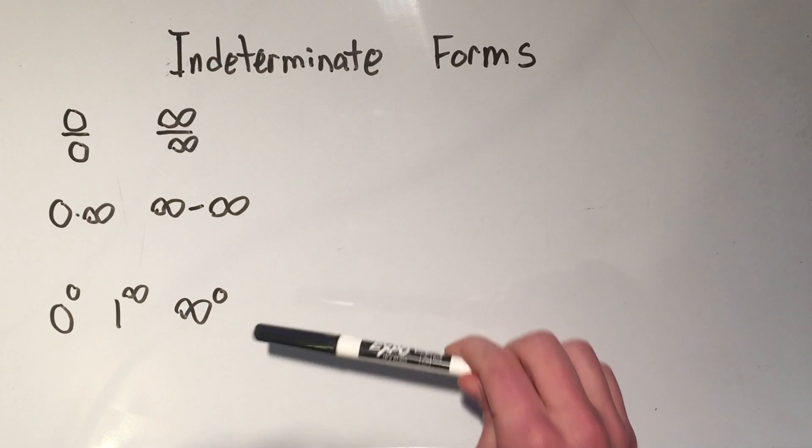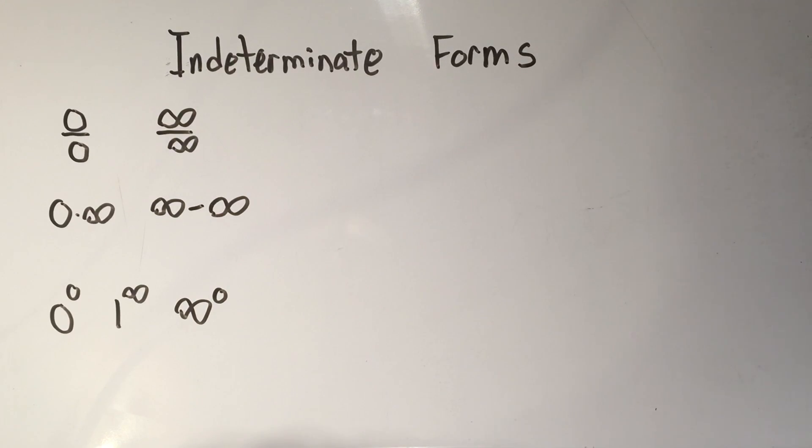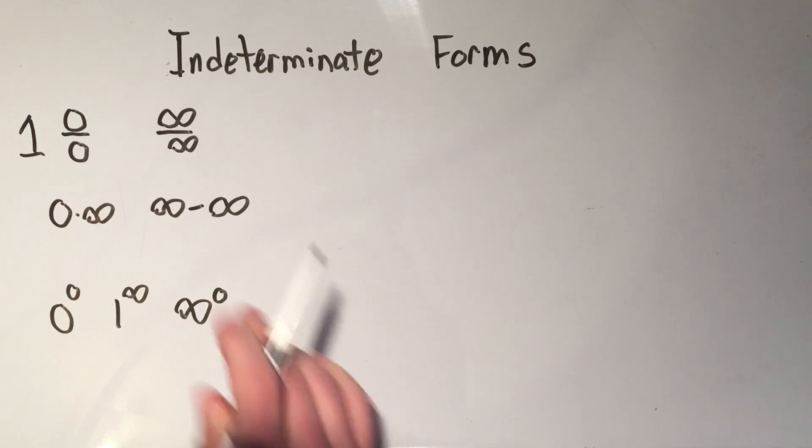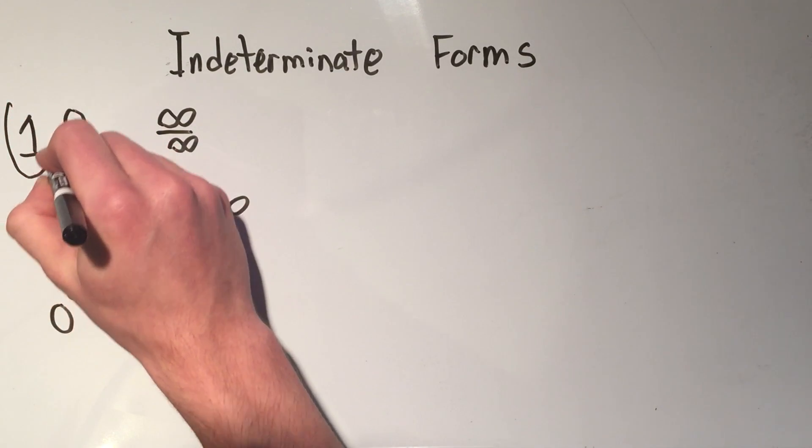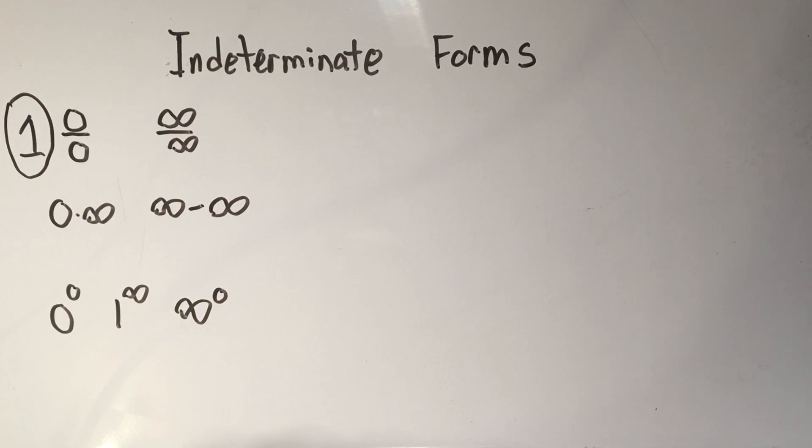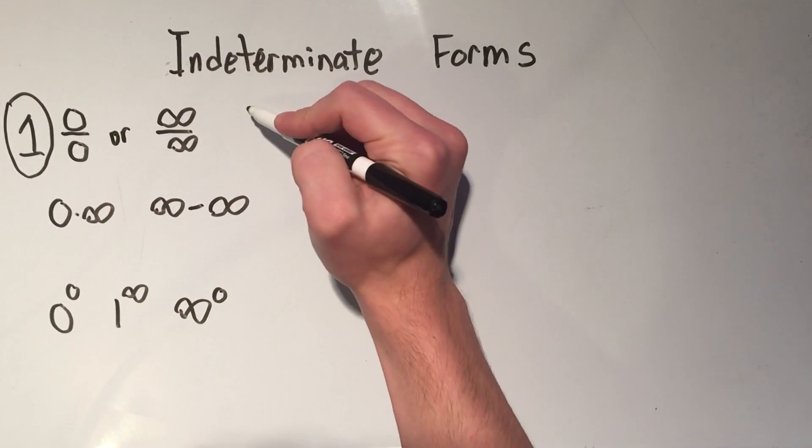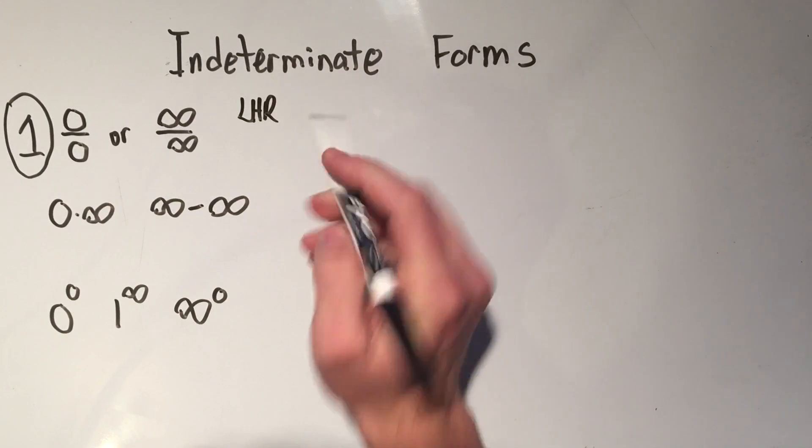So I've broken them up into three different categories. This first category is the one that comes up the most and it's the easiest to deal with because when you get zero over zero or infinity over infinity, immediately you can just do L'Hôpital's rule.